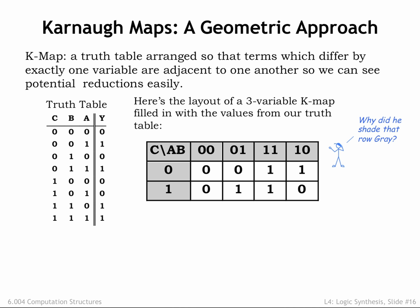The K-map organizes the truth table as a two-dimensional table with its rows and columns labeled with the possible values for the inputs. In this K-map, the first row contains entries for when c is 0 and the second row contains entries for when c is 1.